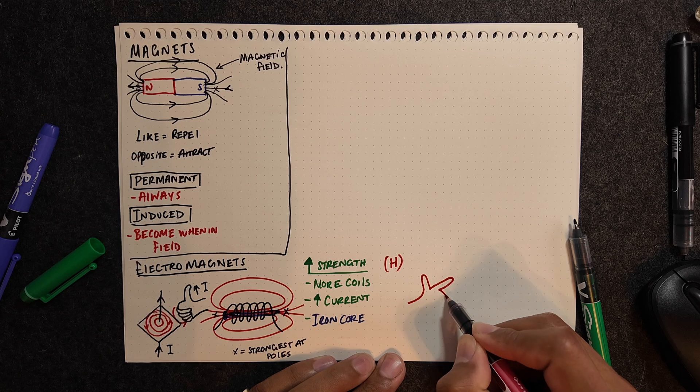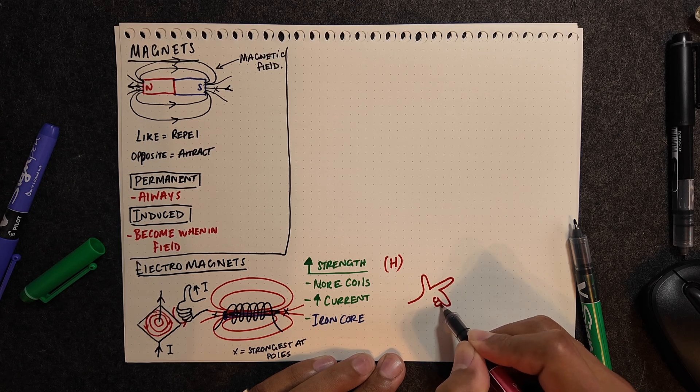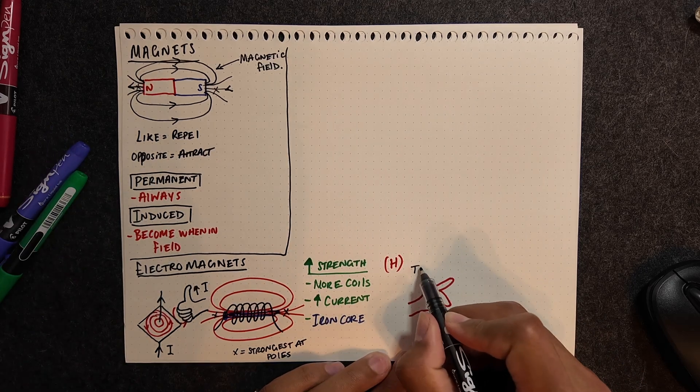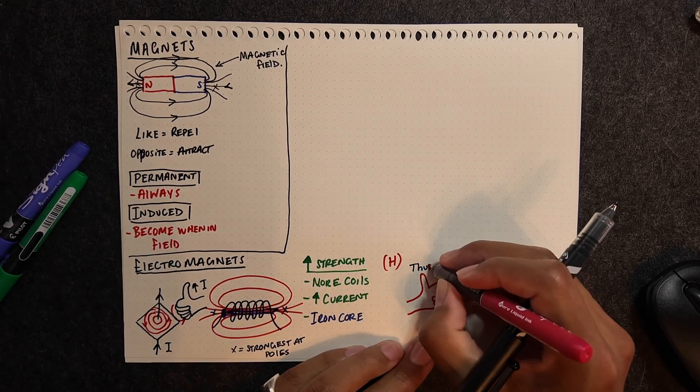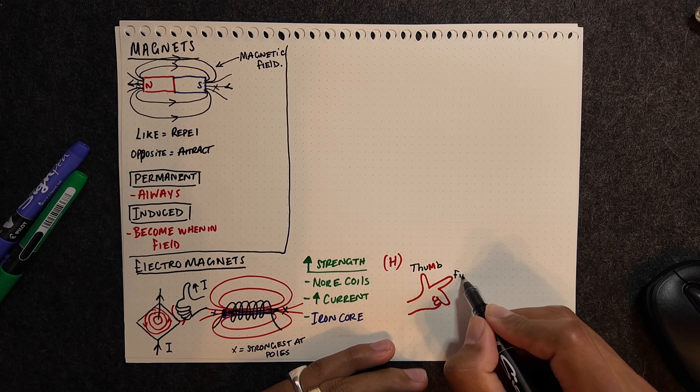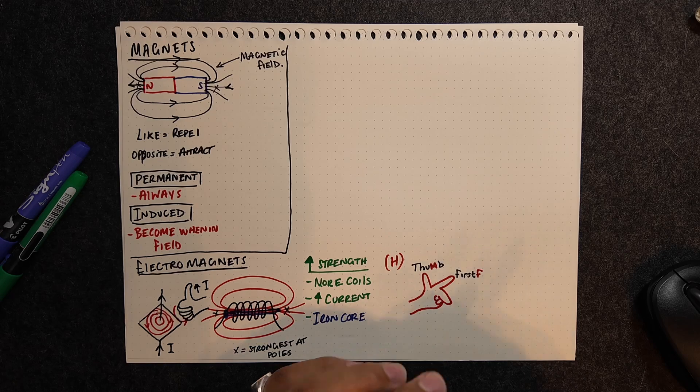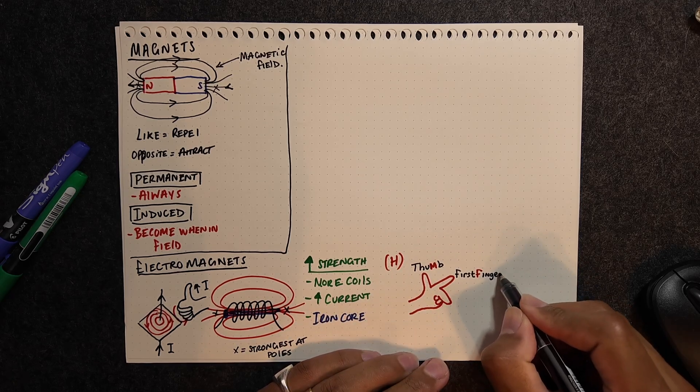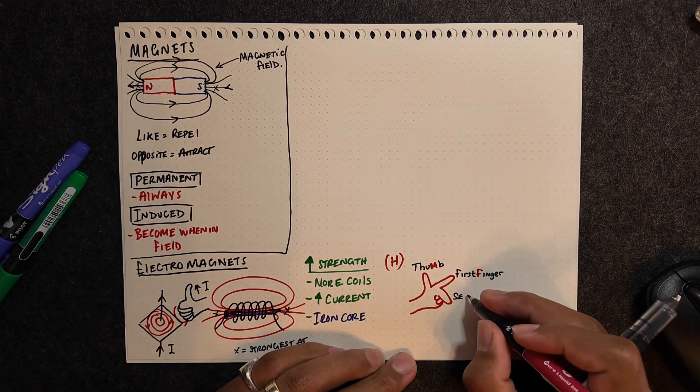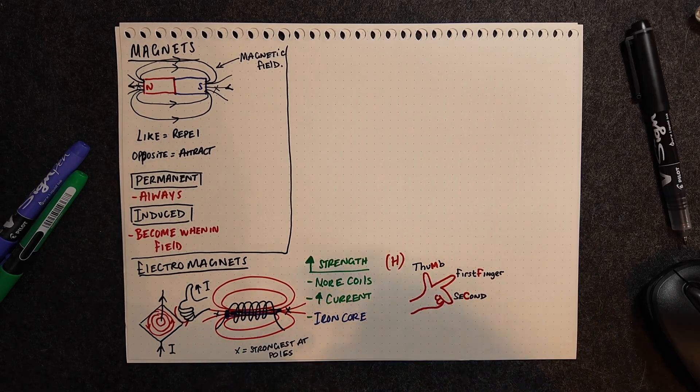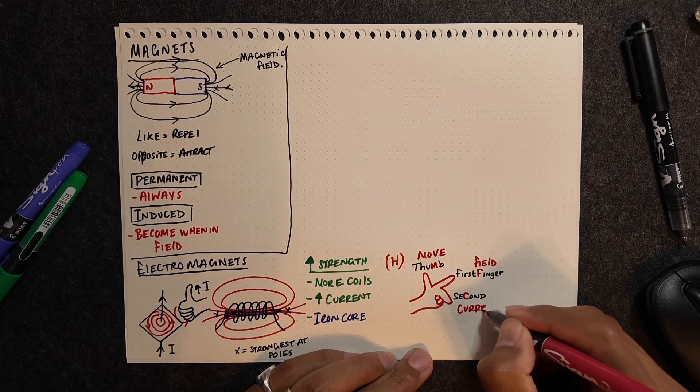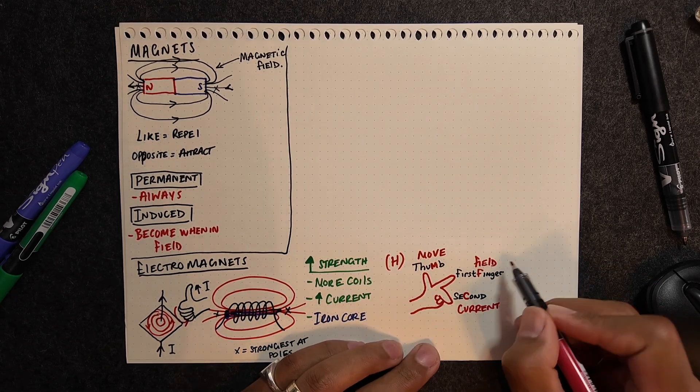Now a section here that's only for higher is to do with Fleming's left-hand rule, and this explains motor effect. This rule helps to determine the direction of the motion, which is represented by the thumb, the magnetic field, which is represented by the first finger. I've highlighted the M in thumb, F in finger, and the C in the second finger. M meaning the movement of the wire, F representing the field, and C representing the current.